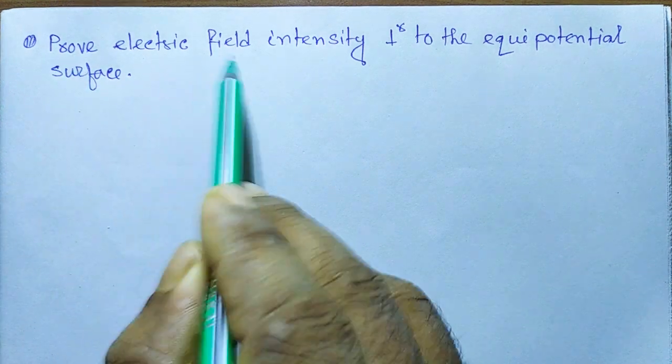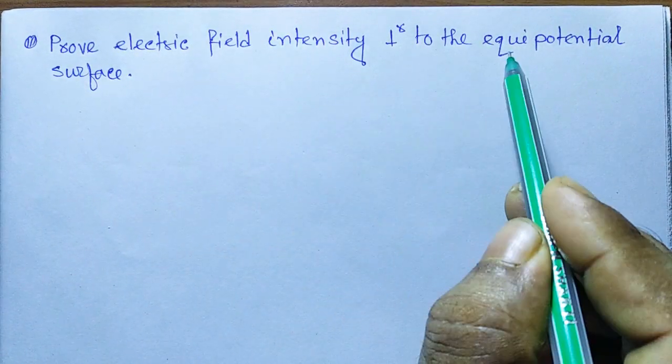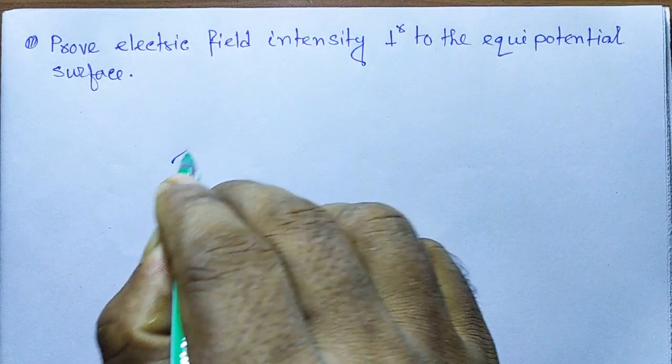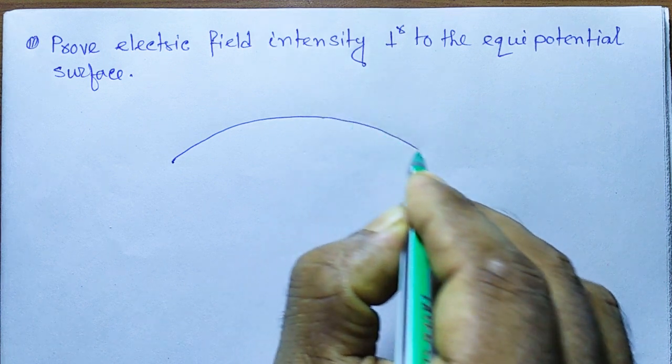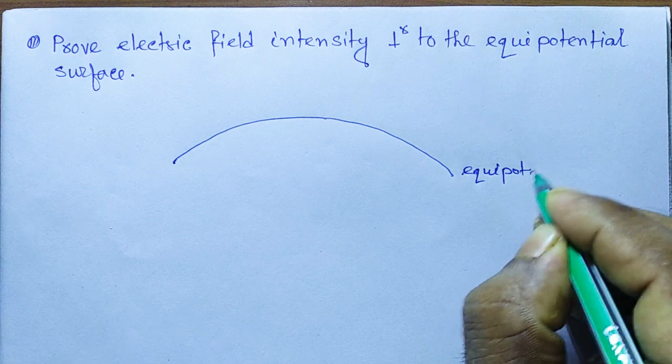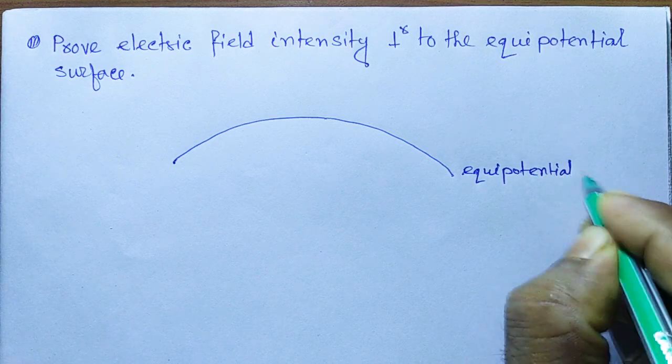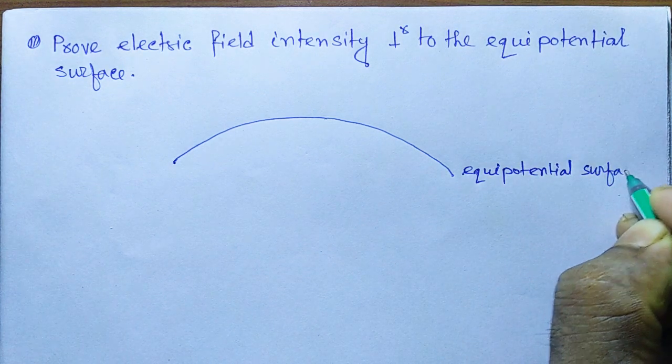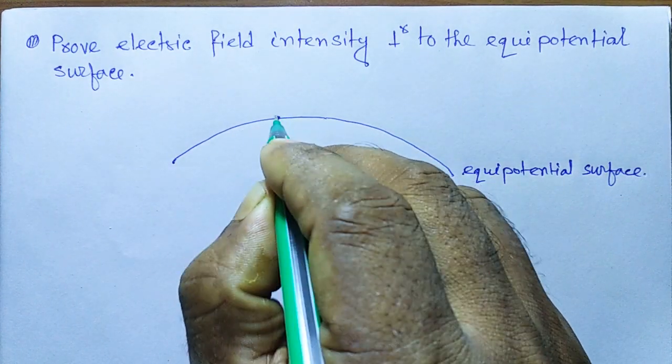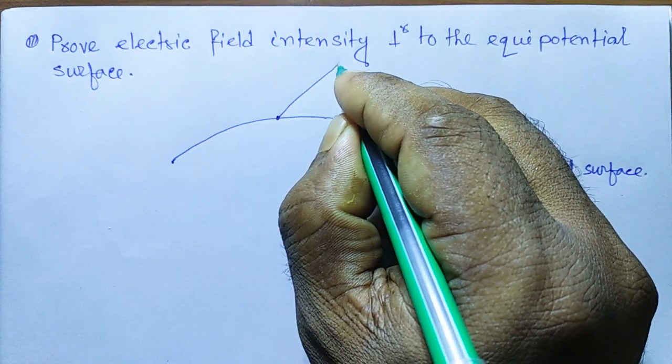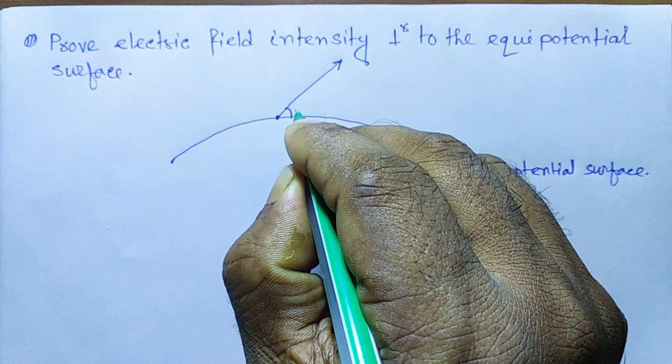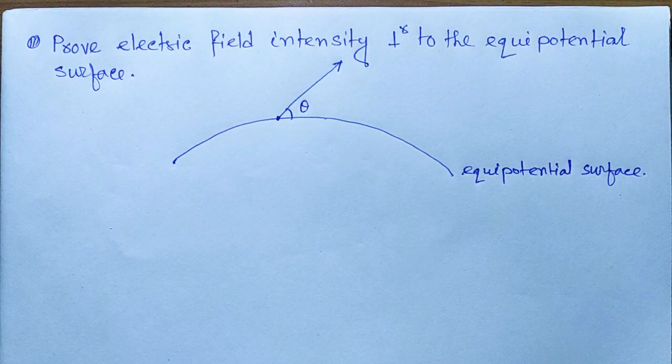The question is: prove electric field intensity is perpendicular to the equipotential surface. Now we consider an equipotential surface.